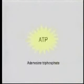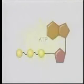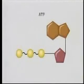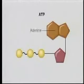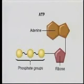The molecule used by most organisms to transfer energy is called adenosine triphosphate, or ATP. ATP has three parts: adenine, ribose, and phosphate groups.